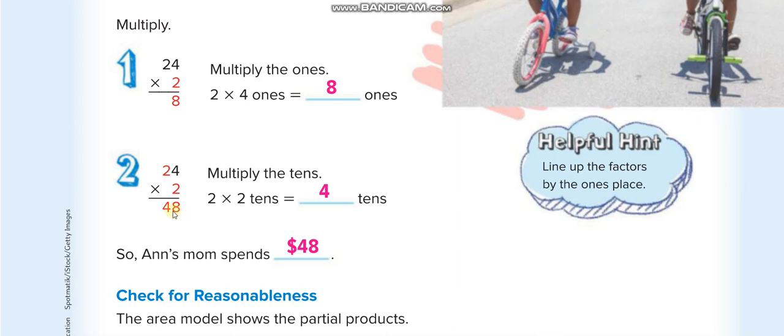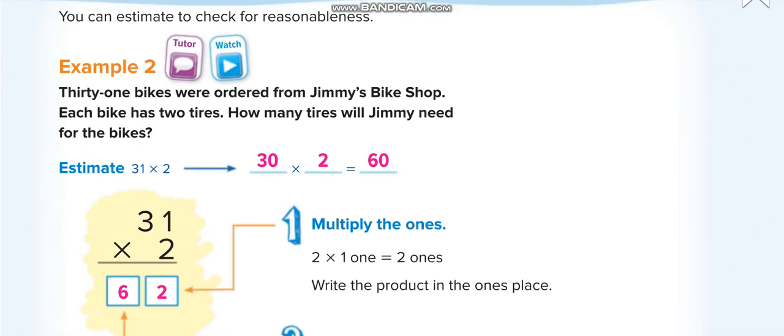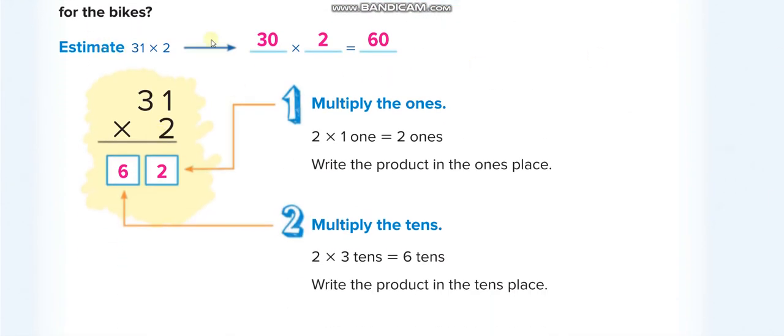Here it is 40 plus 8 equals 48. Again, this is the estimate of 31 is 30. 30 times 2 is 60. 2 times 1 is 2, and 2 times 3 is 6.